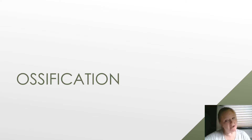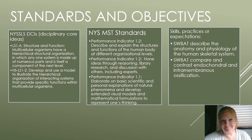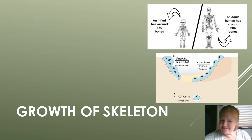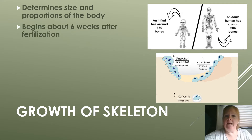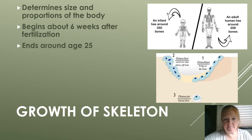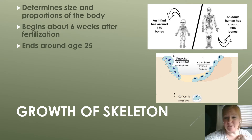This video is going to cover ossification. The growth of the skeleton determines the size and proportions of the body. If our skeleton doesn't grow, that obviously affects our body size. Ossification begins about six weeks after fertilization, pretty early in the developing embryo. It ends around age 25 — the clavicle is one of the last bones to ossify, along with some of the facial bones.